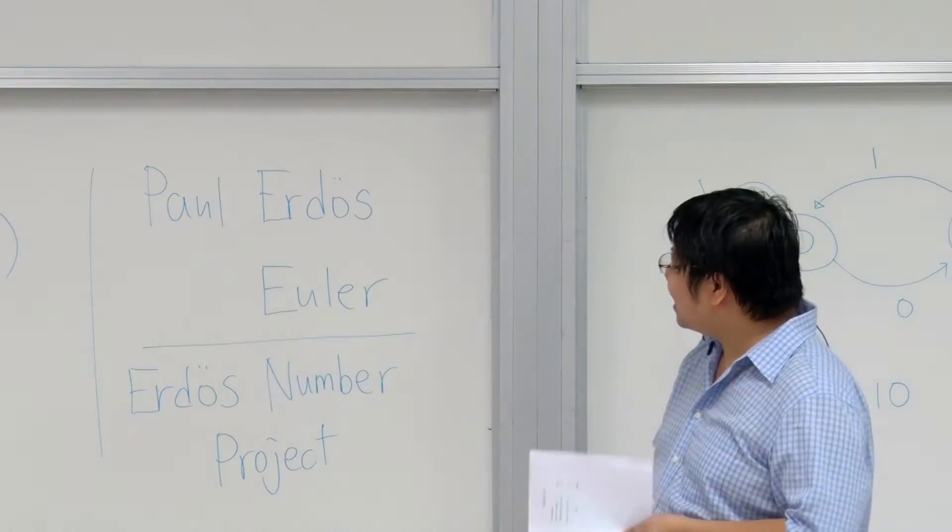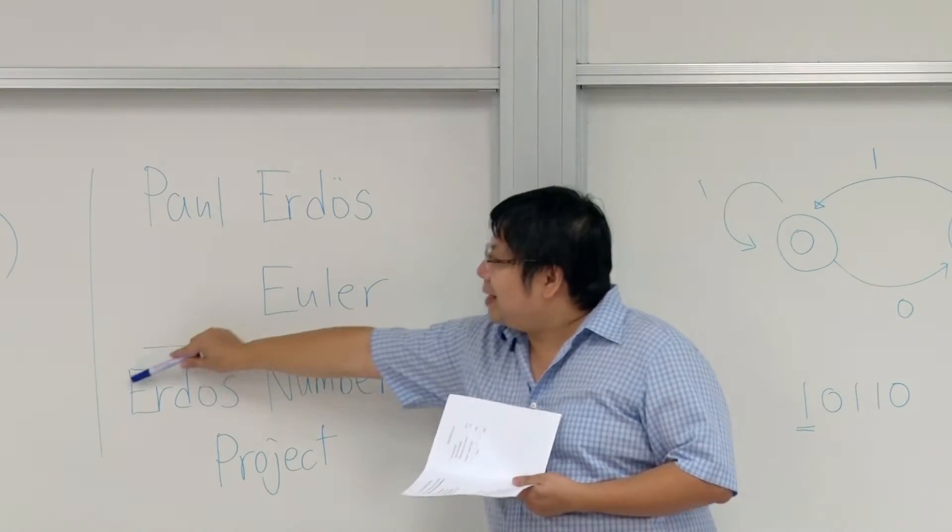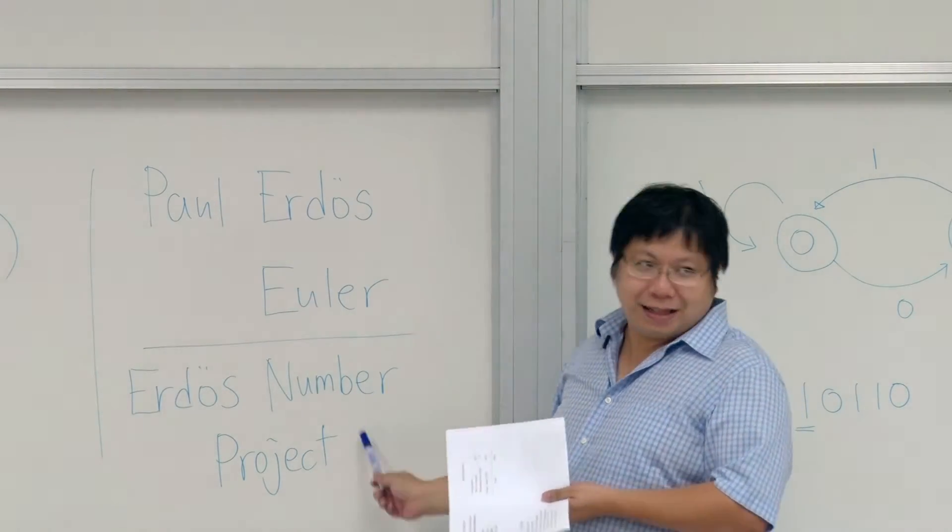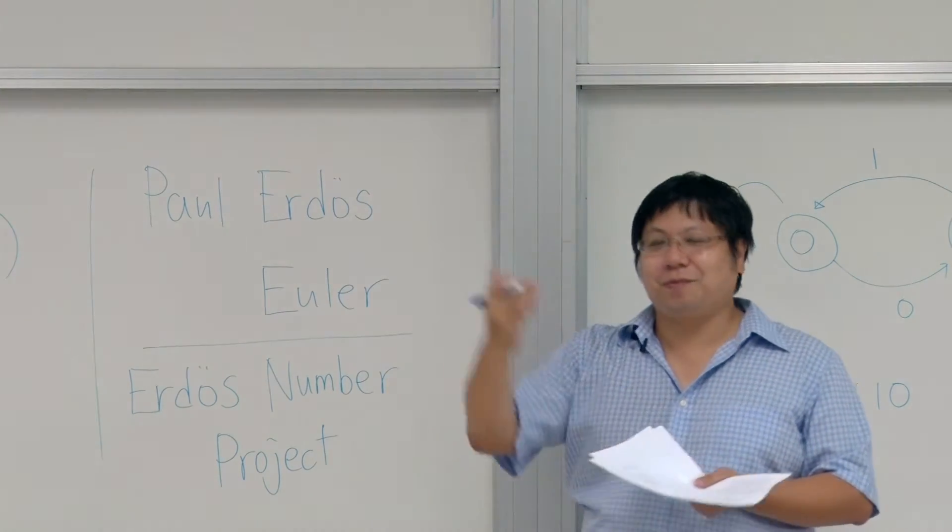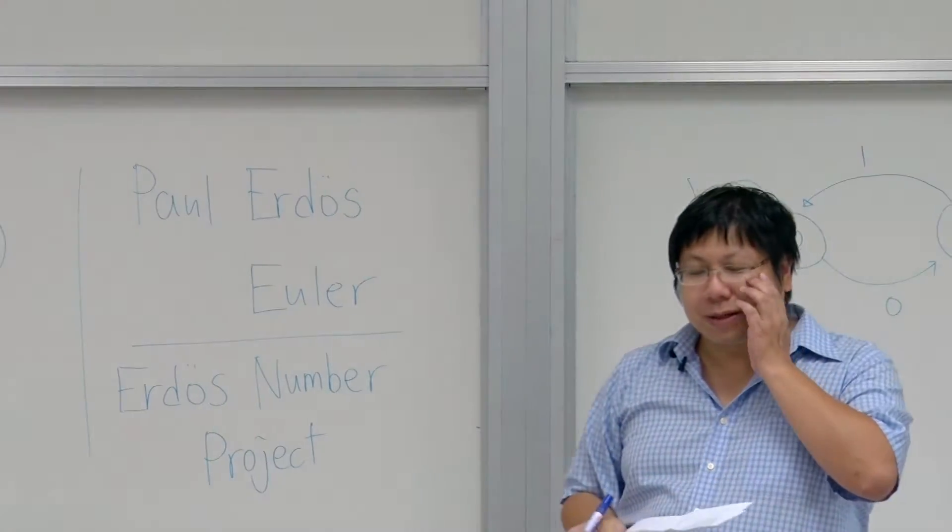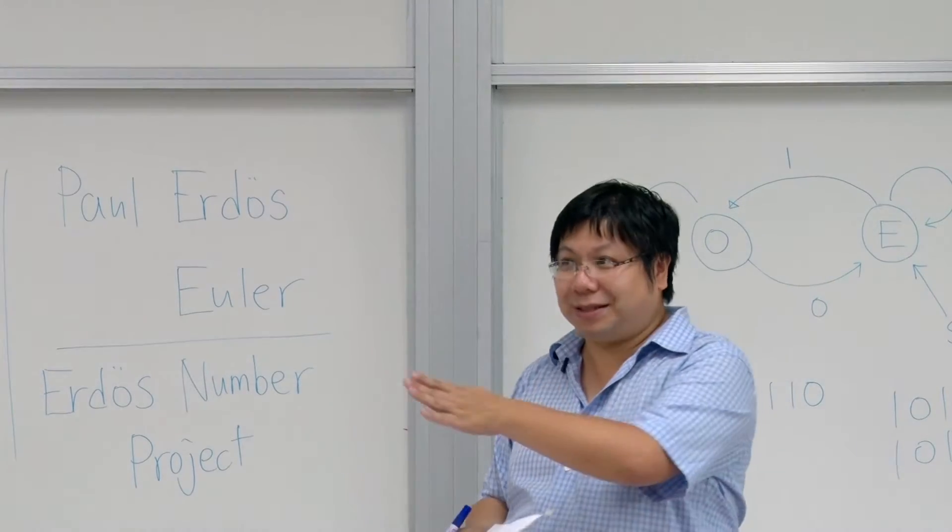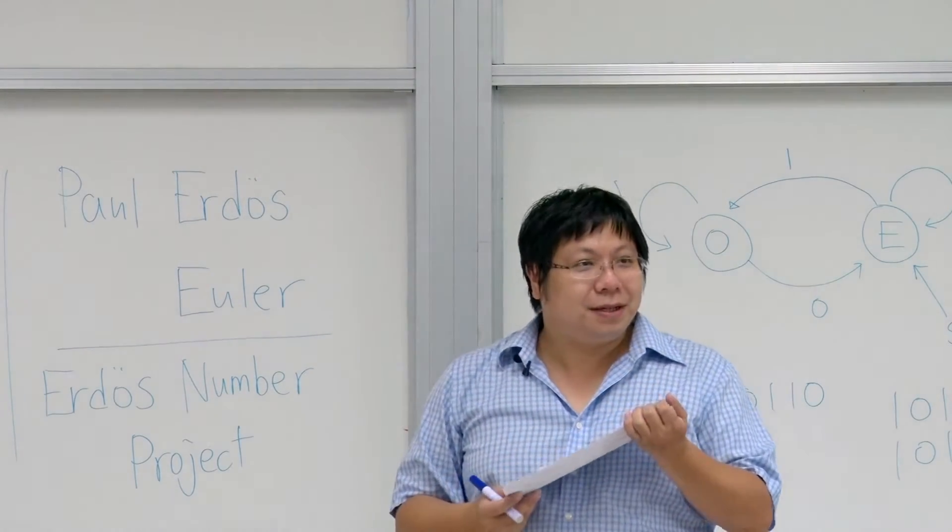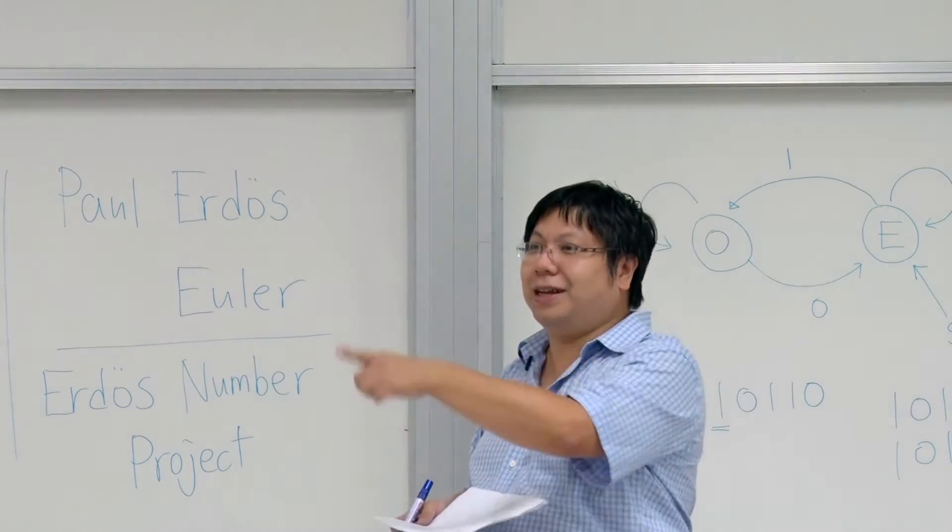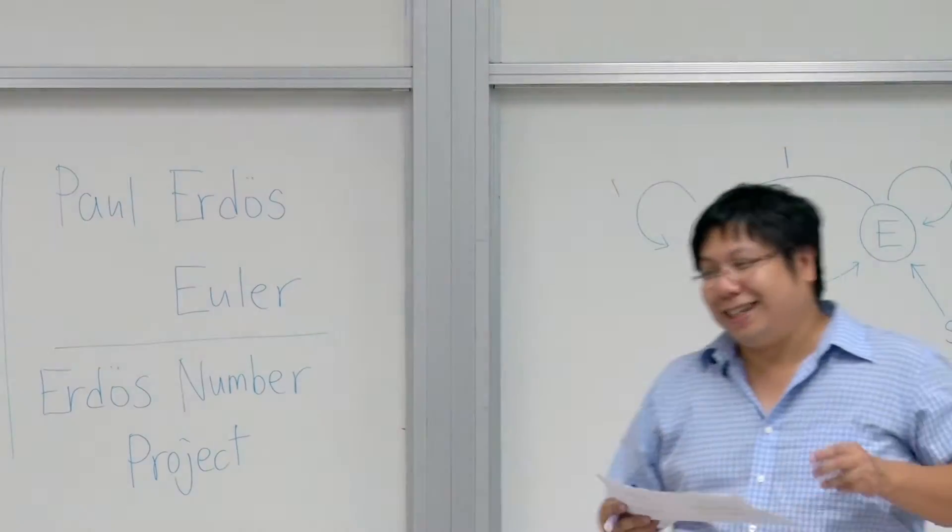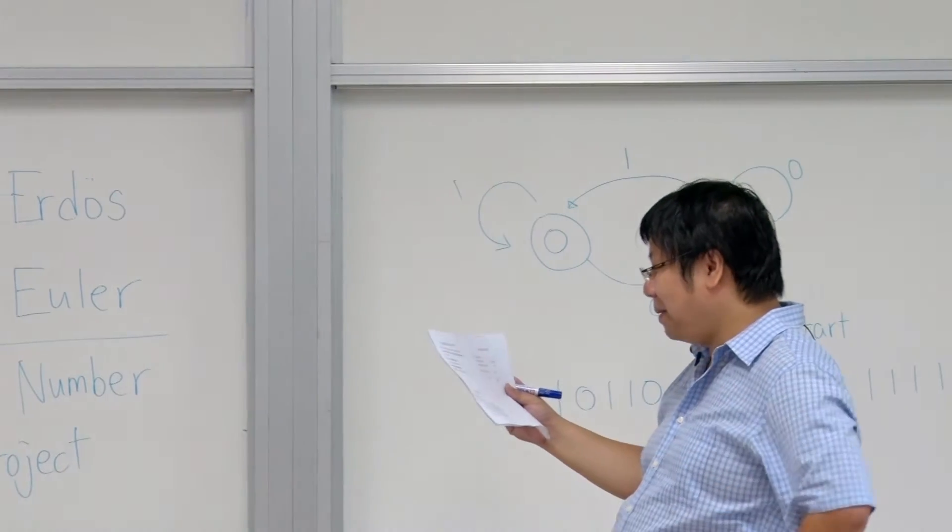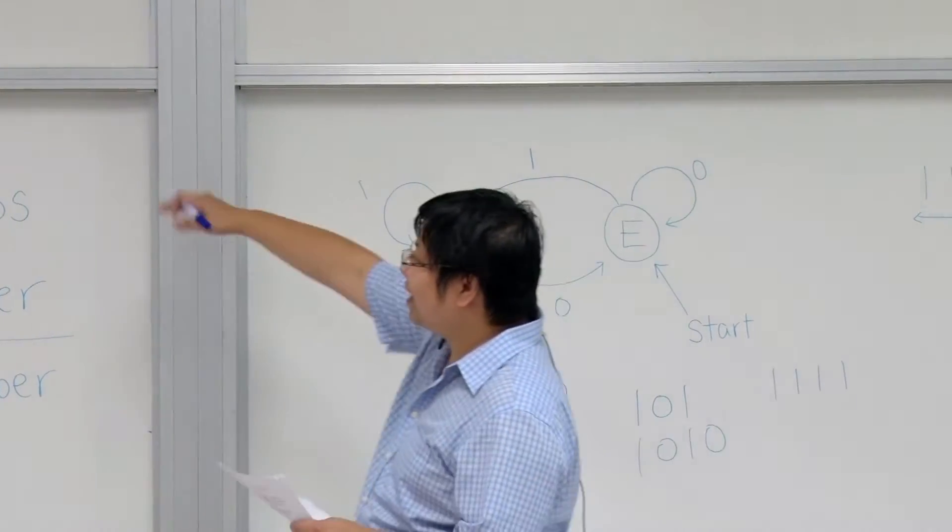But when you see that there is some Erdős number project, that means that this Paul Erdős is really famous, and a lot of people love him. And there was a book. There is still a book. The book names The Man Who Loves Only Numbers. This is talking about Paul Erdős. So you can buy it in the bookstore. Having said enough of this,